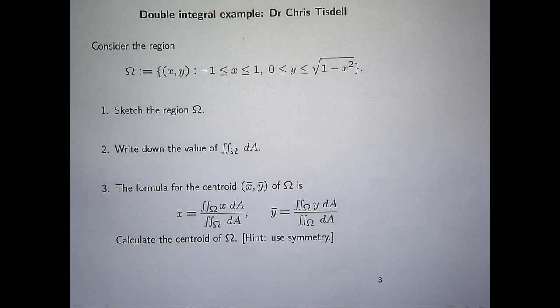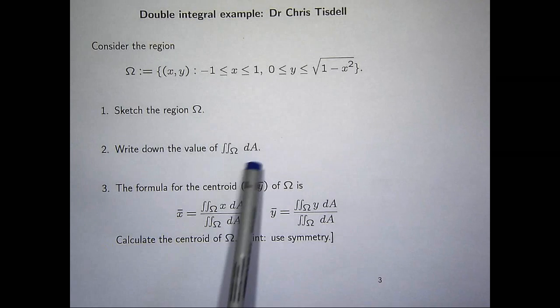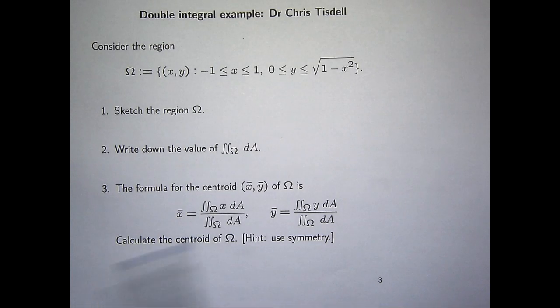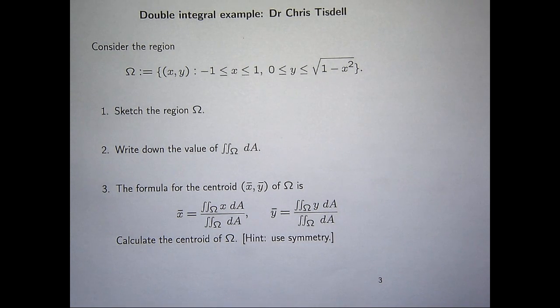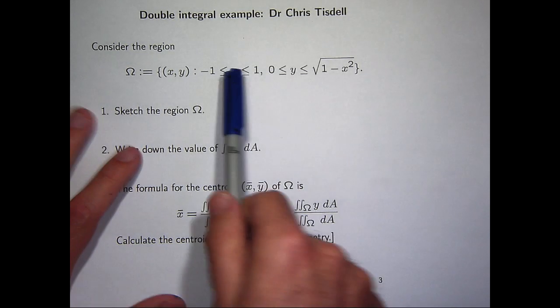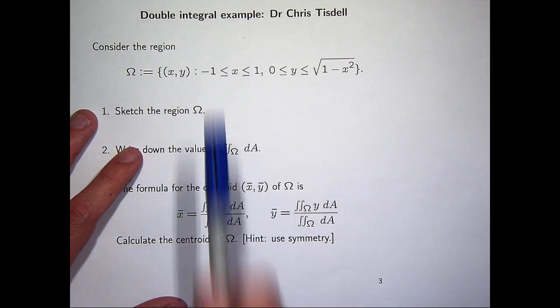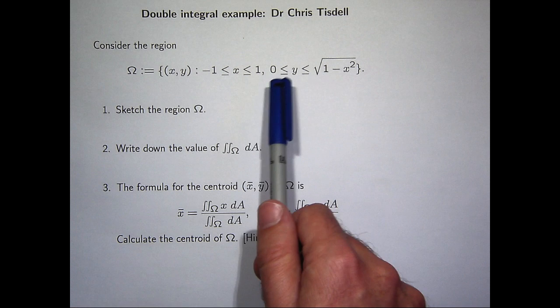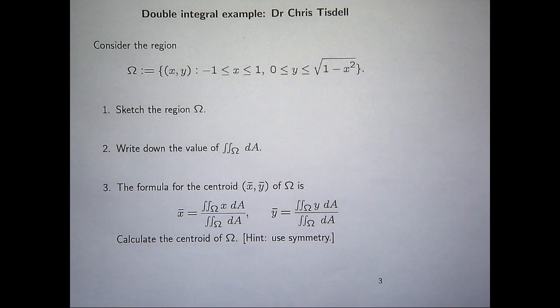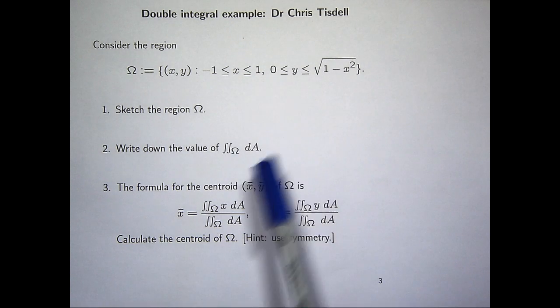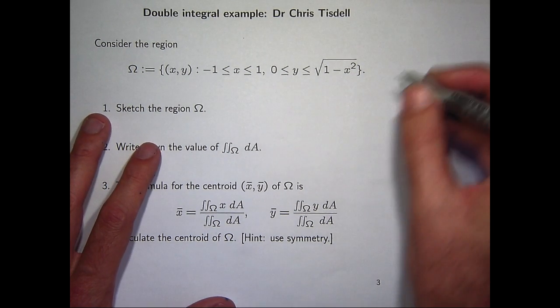So I've got some region. I'm asked to sketch the region omega, write down the value of this double integral, and then using these formulae for the coordinates of the centroid, calculate the x-bar and y-bar. So let's have a sketch of the region. X is between these two parallel lines, minus 1 and 1, and y is between this curve and this curve. So what I like to do with these problems is sketch the bounding curves first.